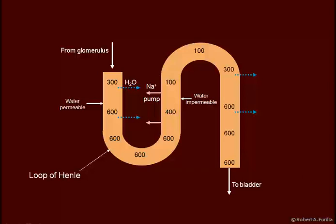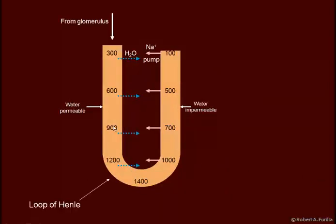If we continue increasing the size of this loop, we now have a longer period of time that the fluid is in the tubule, more pumps, we're now concentrating up to 12 to 1400 milliosmoles per liter. And that means the surrounding fluid is going to have 12 to 1400 milliosmoles per liter.